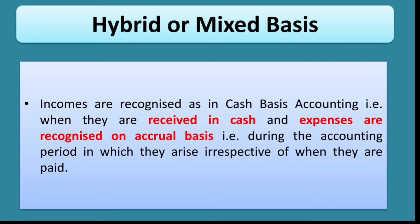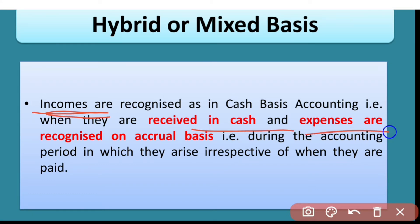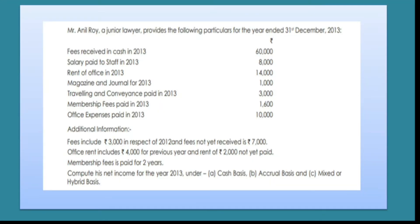The third kind of method is the hybrid method, also called the mixed method. In this, incomes are recorded on the cash basis and expenses are recorded on the accrual basis — that means in the year in which they are incurred.